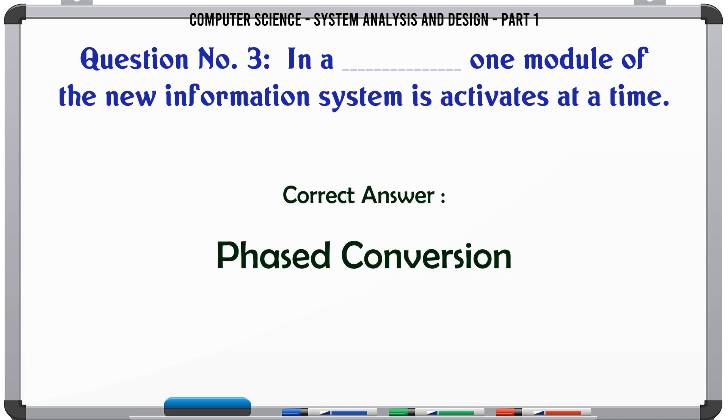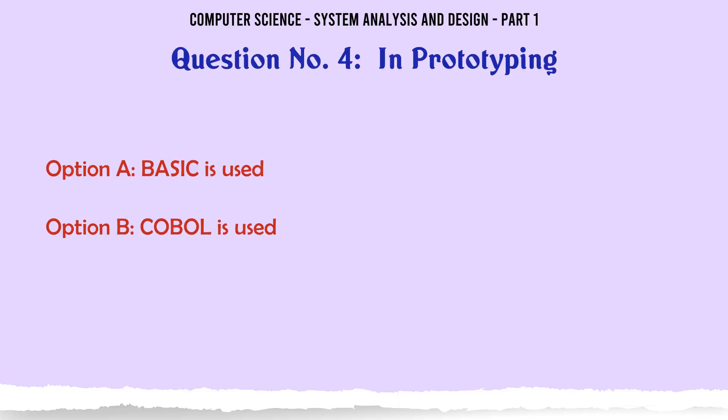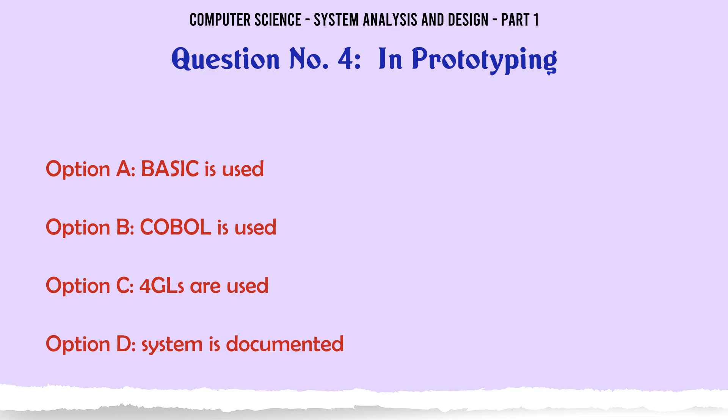The correct answer is: Phased conversion. In prototyping: A. Basic is used. B. Cobol is used. C. Fourth-generation languages (4GLs) are used. D. System is documented.